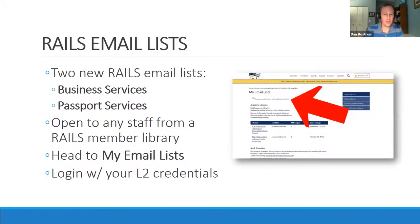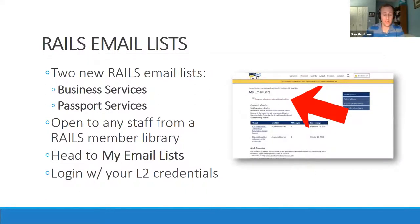I also want to point you to some new email lists. We have two that were created based on requests from staff at member libraries. The first is the business services list, and the second is passport services. Both are public lists, available to anyone with an L2 credential. You can subscribe by logging into the Rails website with your L2 username and password.